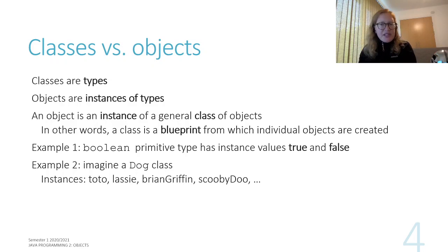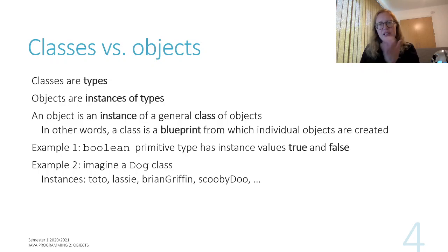If you imagine a dog class, then maybe the instances of that class could be Toto, Lassie, Brian Griffin, Scooby-Doo, any other dogs you can think of. That's the distinction between classes and objects.